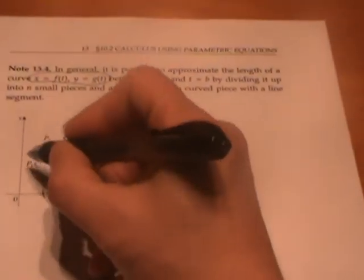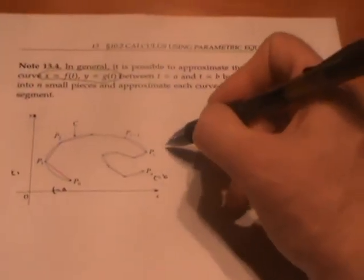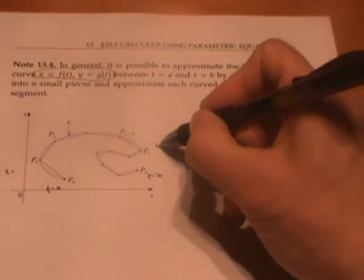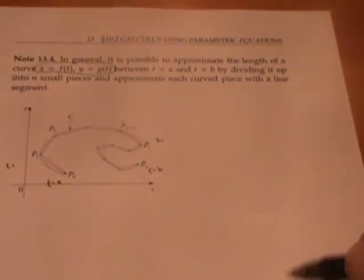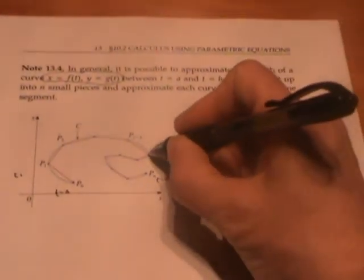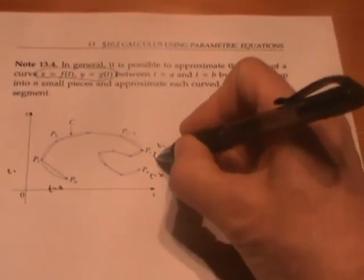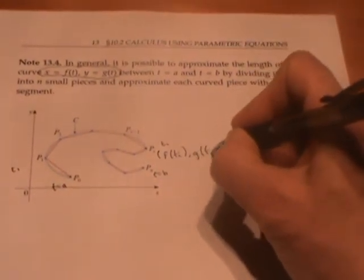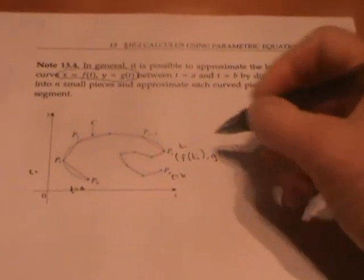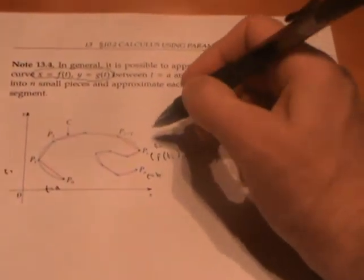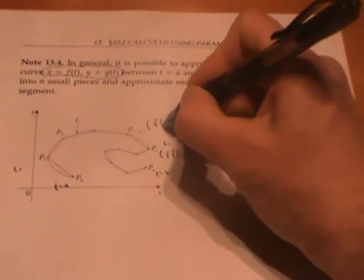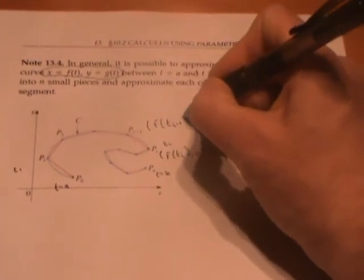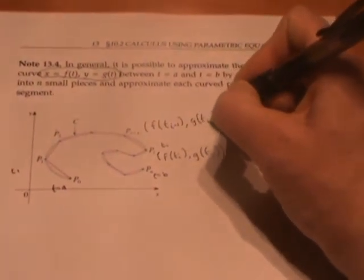So p1 is where I get to at time t1, and I get to pI at time tI. Since these equations give the x and y coordinates of all these points, the coordinates of point pI is f of tI, g of tI. And the coordinates at point pI minus 1, when time is tI minus 1, is f of tI minus 1, g of tI minus 1.